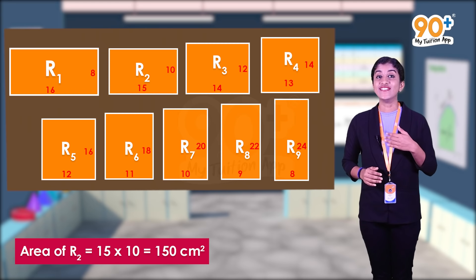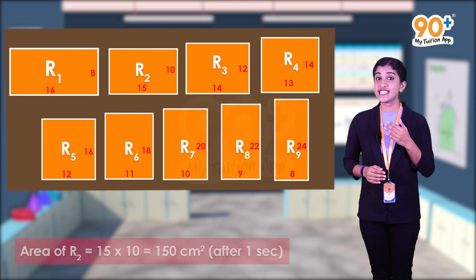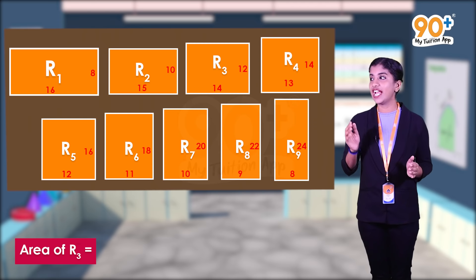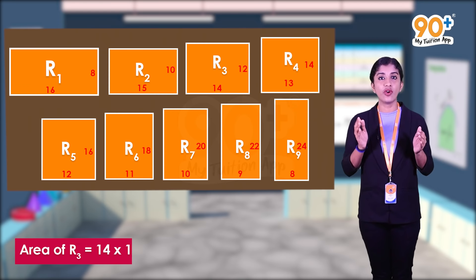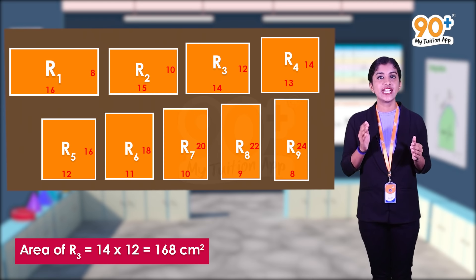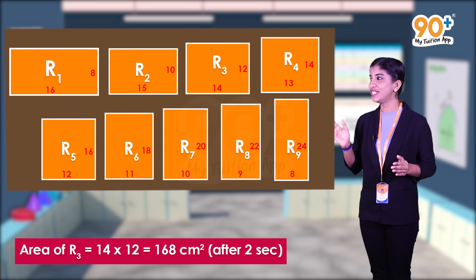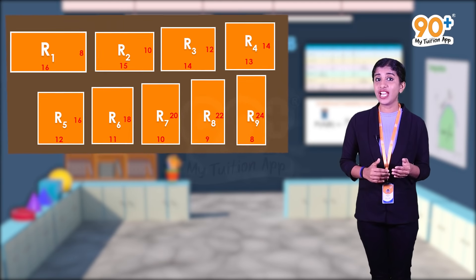Similarly, area of rectangle r3 is equal to 14 into 12, which is equal to 168 centimeter square, which is the rectangle that we got after 2 seconds. Similarly, we can find the area of the remaining rectangles.